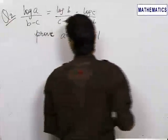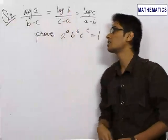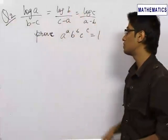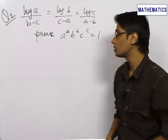In our next problem, we are given with log a upon b minus c equals log b upon c minus a equals log c upon a minus b. And we need to prove that a^a times b^b times c^c equals 1.